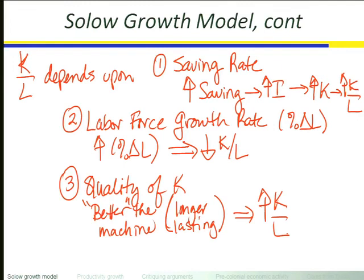How rapidly total factor productivity is growing is the last piece that determines what's happening to our standards of living. The faster A is increasing, the faster standards of living are going up. A incorporates all sorts of things — technology, educational attainment, financial institutions and their quality because they channel funds from savers to investors, property rights, judicial systems, communications networks, transportation networks. All of that stuff is in A, and the rate at which total factor productivity grows determines the rate at which standards of living grow — which gets back to tables one and two from Tuesday.